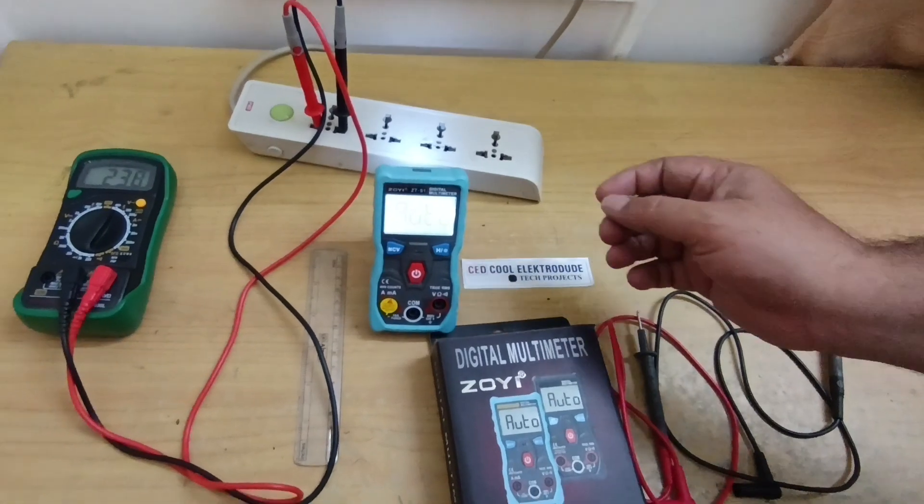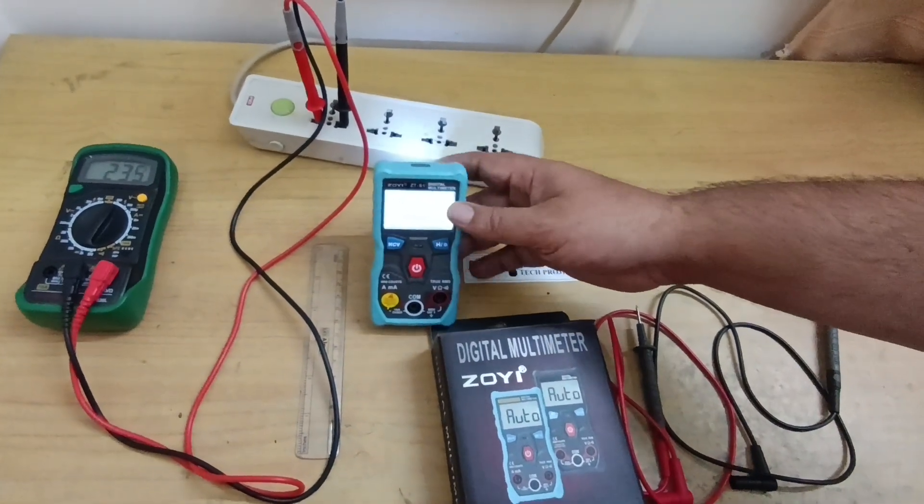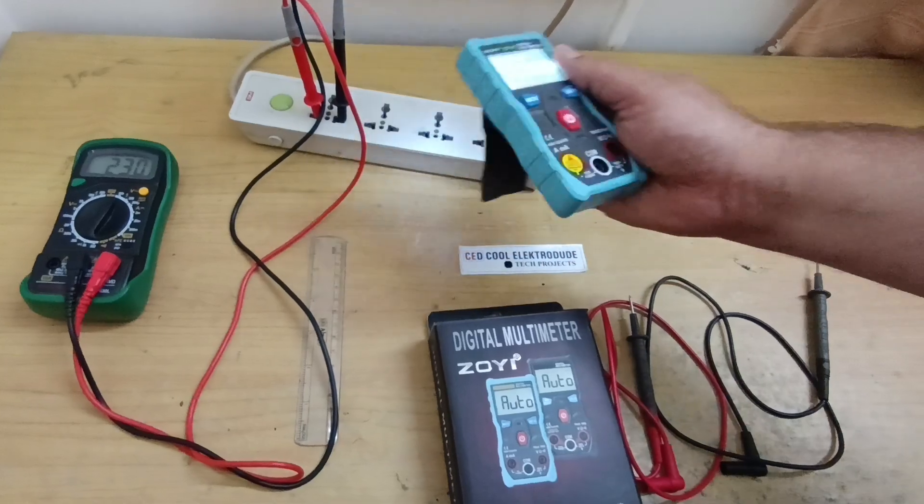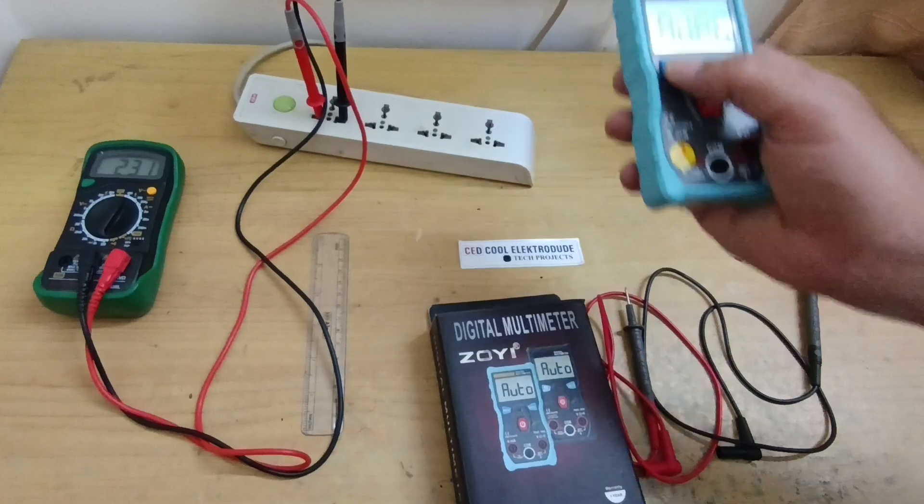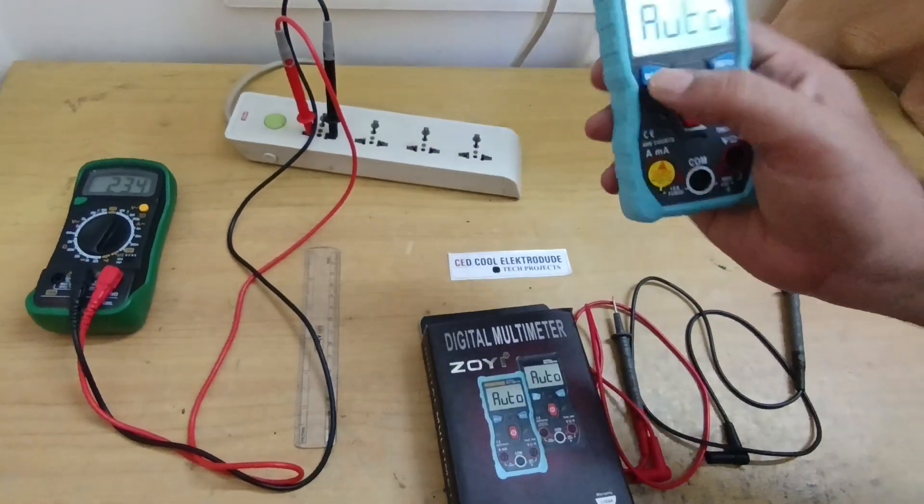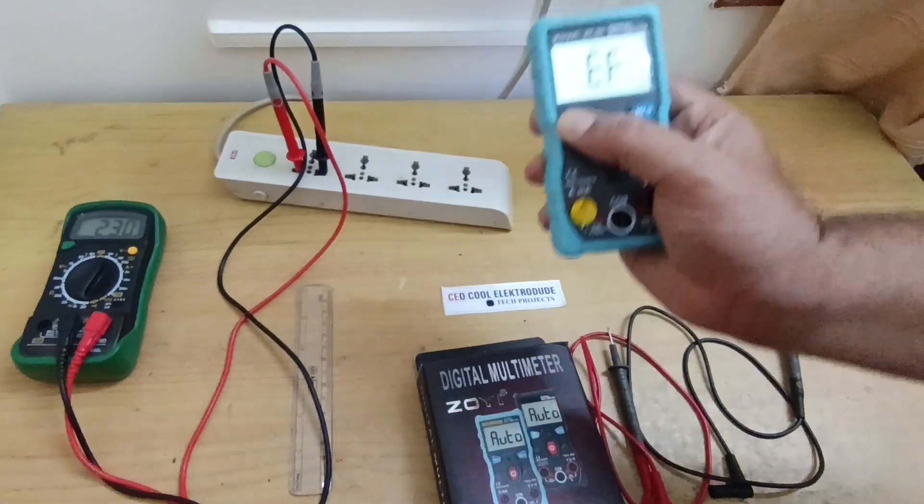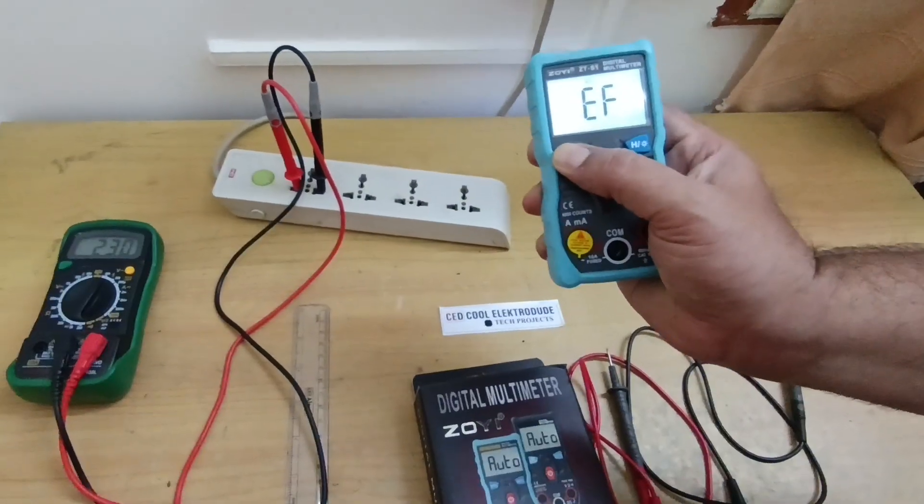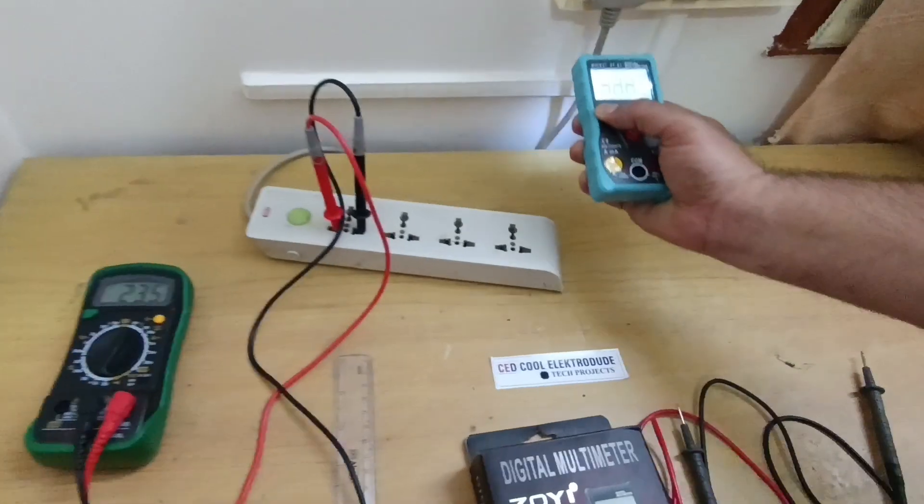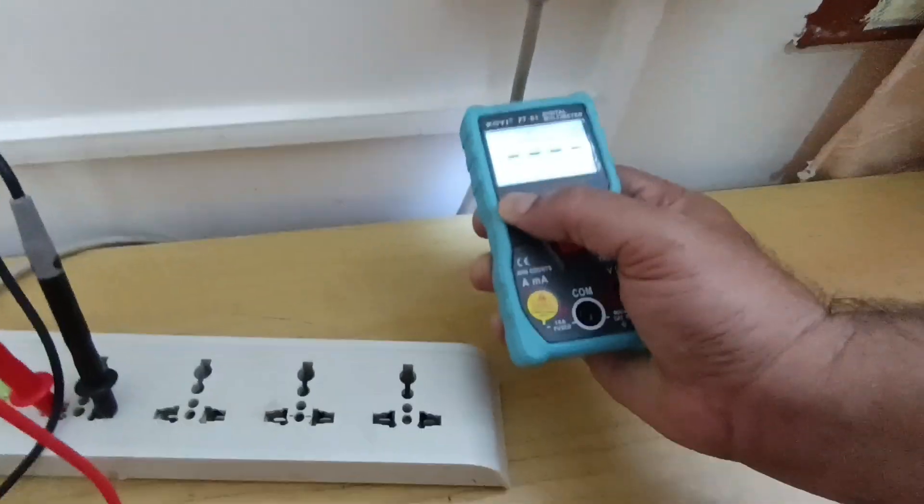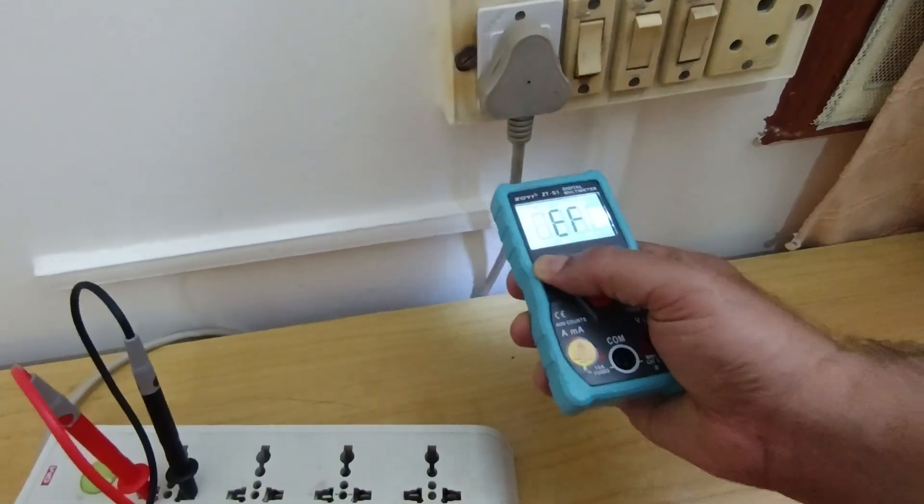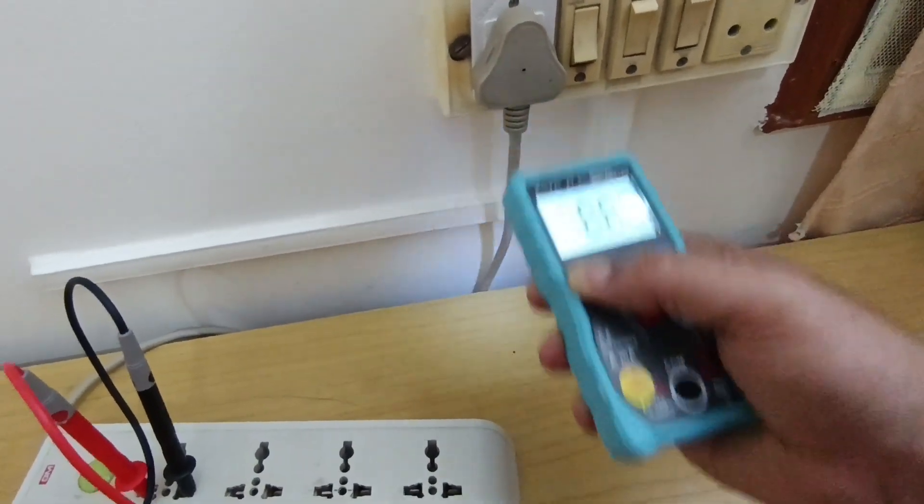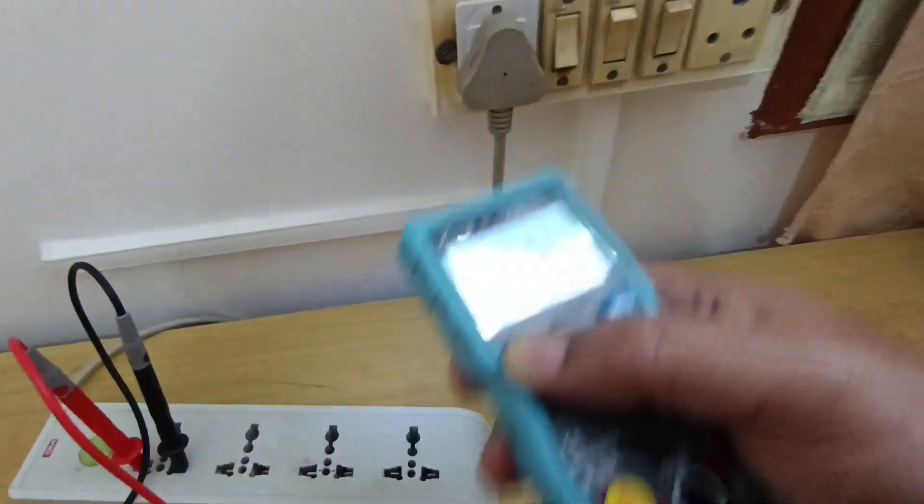We'll start with the NCV measurement. I will show you the non-contact measurement—we have to press this button. Generally it is EF, which means there is no signal. We have to go to the source and you can see here it detects the signal. If I turn off, there is no signal coming here, no non-contact voltage measurement.